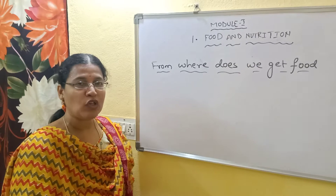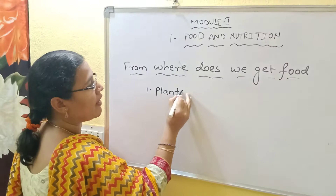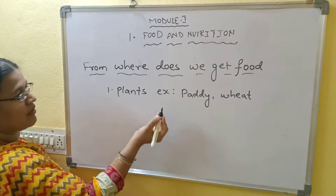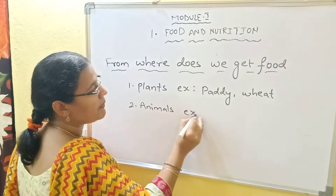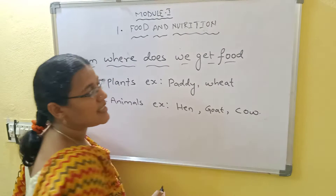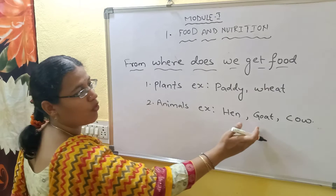Do you know children, from where do we get food? We get food from plants as well as animals. Can you say the examples? Plants like paddy and wheat give us food. Animals like hen, goat, and cow offer us food.